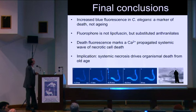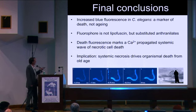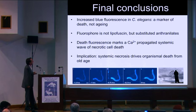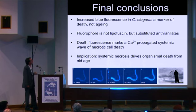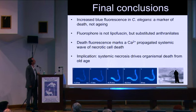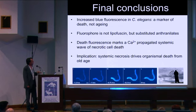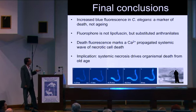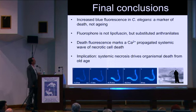Final conclusions: the blue fluorescence in C. elegans is not a marker of aging — it's a marker of death. The fluorophore is not lipofuscin; we can now say that with certainty because we know what it is — it's a substituted anthranilate. Death fluorescence in C. elegans is marking something new, which is a calcium-propagated systemic wave of necrotic cell death. The implication is that systemic necrosis is driving organismal death from old age — what you're actually seeing when you look at this blue fluorescence is death itself happening in real time within the organism, the dynamics of death spreading through the organism.